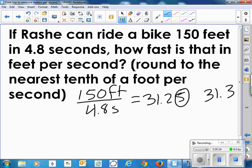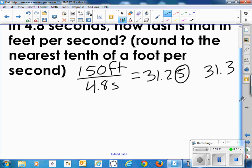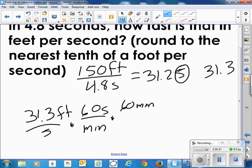5 is anything 5 or above. The next digit is 5 or above. So now in miles per hour, let's do 31.3 feet per second times 60 seconds per minute times 60 minutes per hour times 1 mile is 5,280 feet.